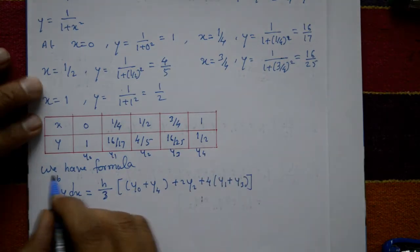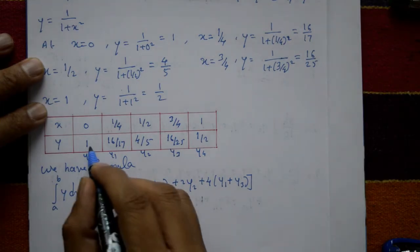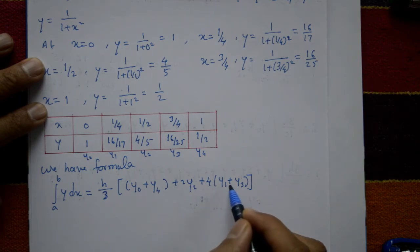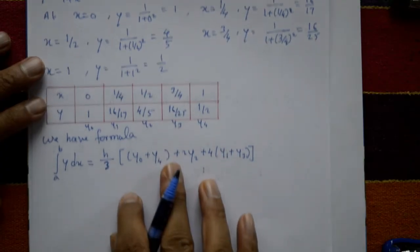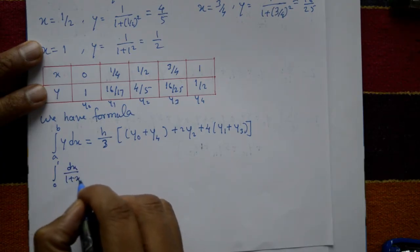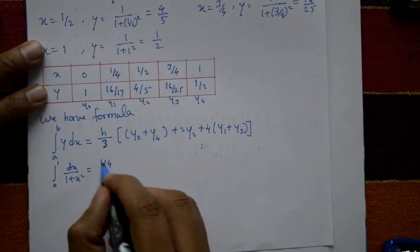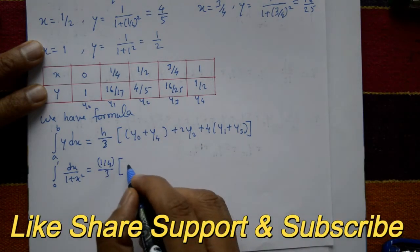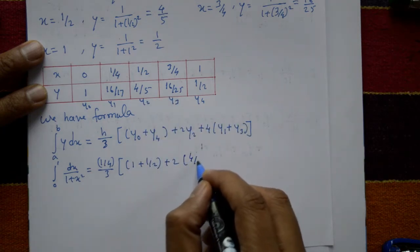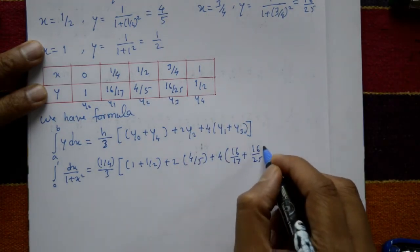Applying Simpson's one-third rule: the integral from a to b of y dx equals (h/3) times [(y₀ + yₙ) + 2×(even-indexed terms: y₂) + 4×(odd-indexed terms: y₁ + y₃)]. Substituting: integral from 0 to 1 of 1/(1+x²) dx = (1/4)/3 × [(1 + 1/2) + 2×(4/5) + 4×(16/17 + 16/25)].